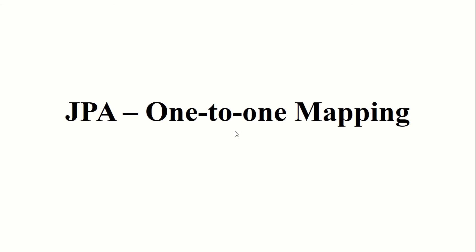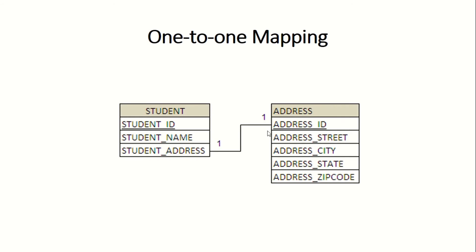In this example program, I am going to create two entities: a student entity and an address entity. On the student entity, I am going to store the primary key of the address as a foreign key in the student entity. Here you can see this is a foreign key referring to the primary key of the address entity. If the mapping is one-to-one, it's your choice to store the foreign key on either side — either address ID on the student side, or student ID on the address side.